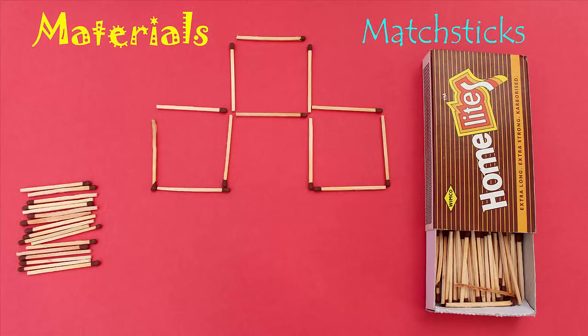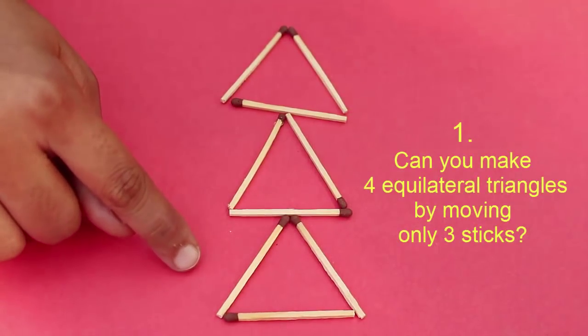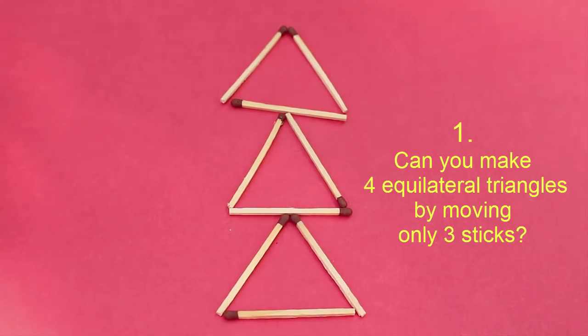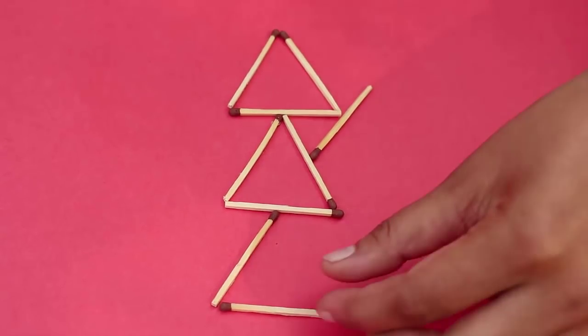In this puzzle you see three equilateral triangles made from nine matchsticks. By moving just three matchsticks, can you construct four equilateral triangles?